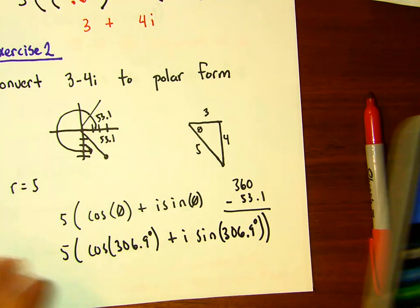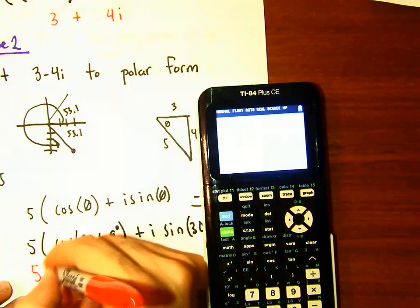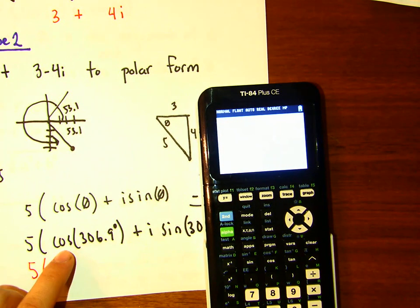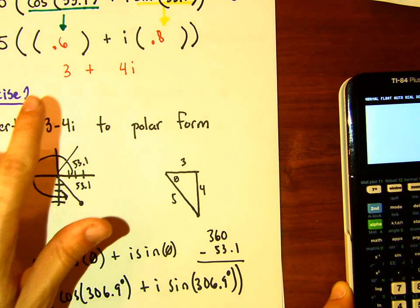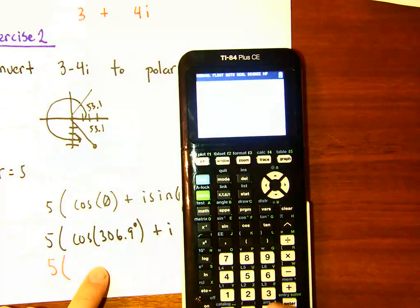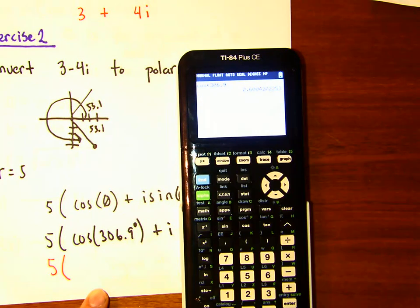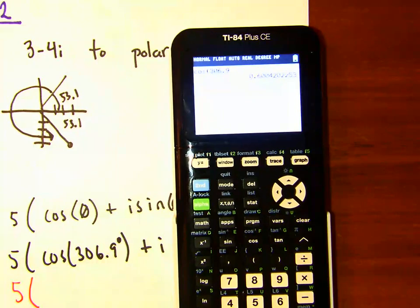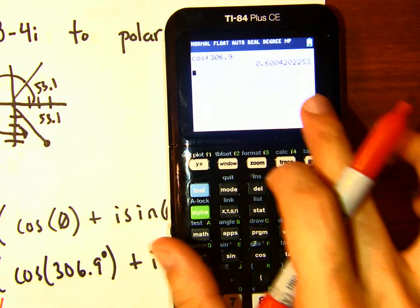So the polar form is five times cosine of 306.9 degrees plus i sine of 306.9 degrees. Let's verify: cosine of 306.9 degrees — let's check the calculator. It is 0.6, which is what we expected.